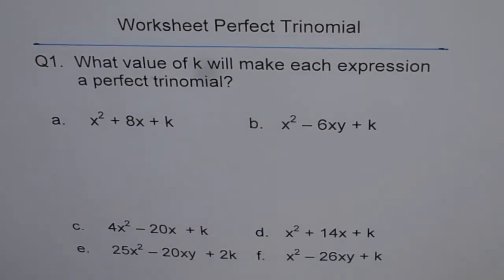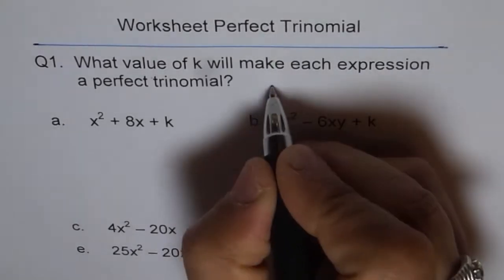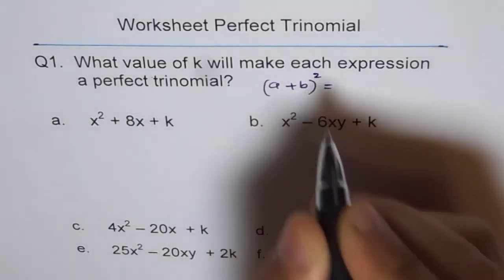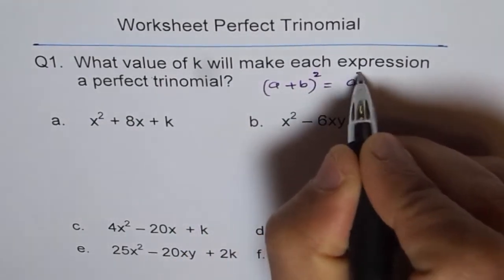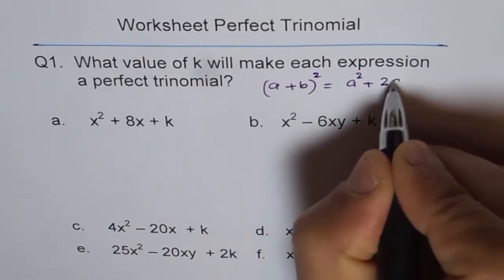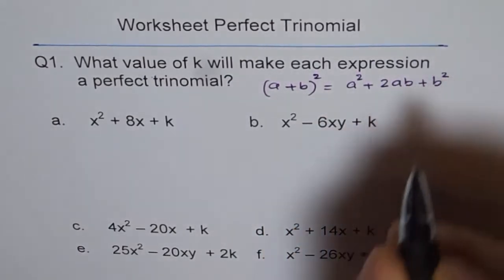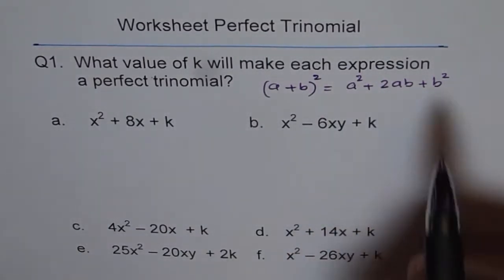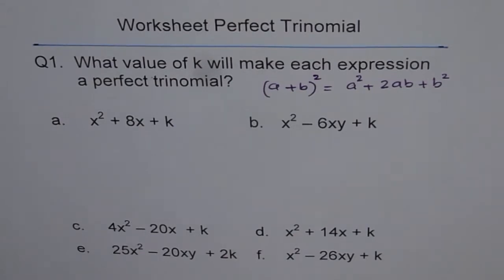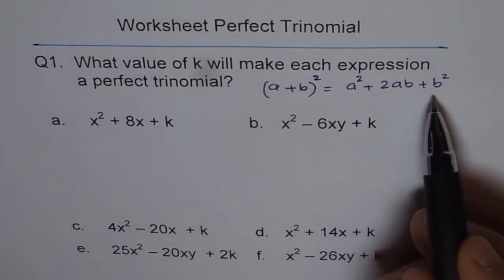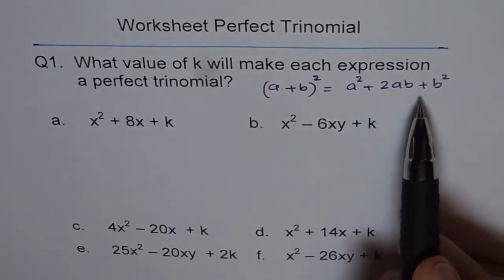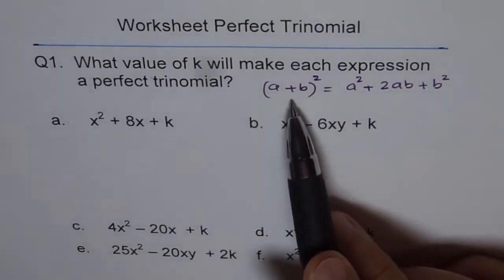Let's first understand what a perfect trinomial is. Remember: (a + b)² = a² + 2ab + b². This is a trinomial — it has three terms. It can be factored and written as (a + b)², meaning both factors are the same: (a + b)(a + b).